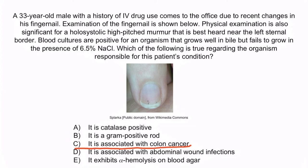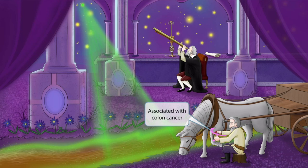A is false — Streptococcus gallolyticus is catalase negative. Staph aureus is catalase positive and can cause endocarditis, but does not grow in the presence of bile. B is also false — Streptococcus gallolyticus is a gram-positive coccus, not a gram-positive rod. D is false as well — it's not typically associated with abdominal wound infections; this is true of Enterococcus. Finally, E is also false — Streptococcus gallolyticus exhibits gamma-hemolysis on blood agar, not alpha-hemolysis. The correct answer is C. Recall that the ribbon wrapped around the horse's wound standing next to the brown river is here to help you remember that Streptococcus gallolyticus is associated with colon cancer.